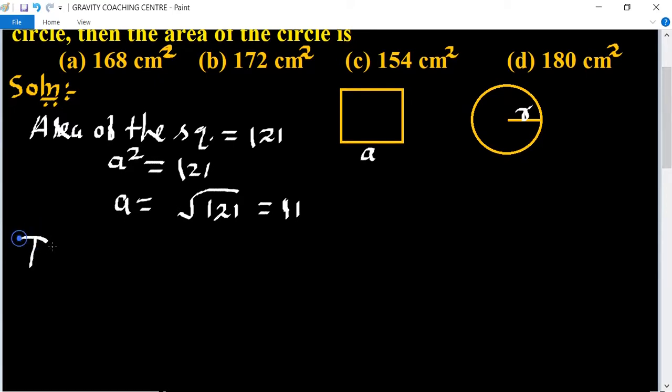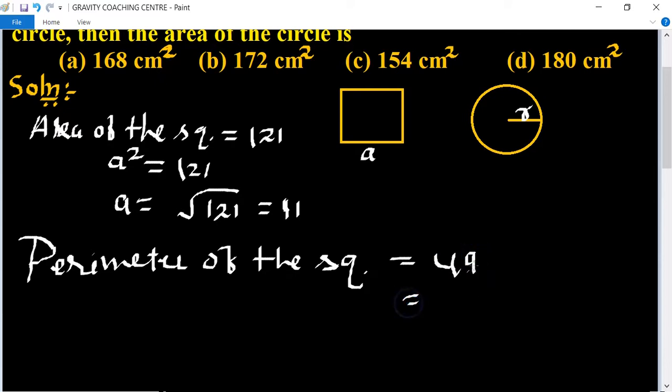Now perimeter of the square equals 4 times the side, which is 4a. So 4 into 11 equals 44 centimeters.